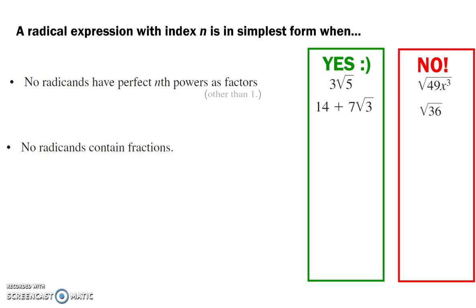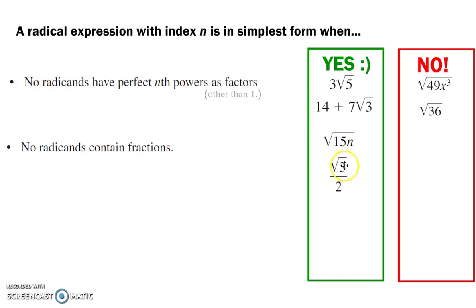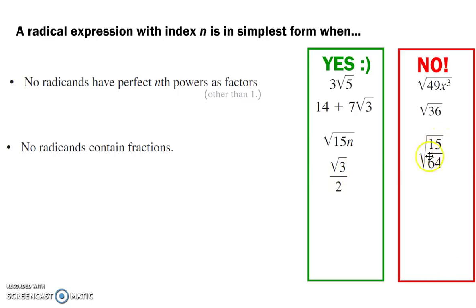No radicands contain fractions — there can't be a fraction underneath the radical sign. Notice that here there is a fraction, but it's not underneath the radical sign; only the 3 is under the radical. However, this right here has a fraction underneath the radical.